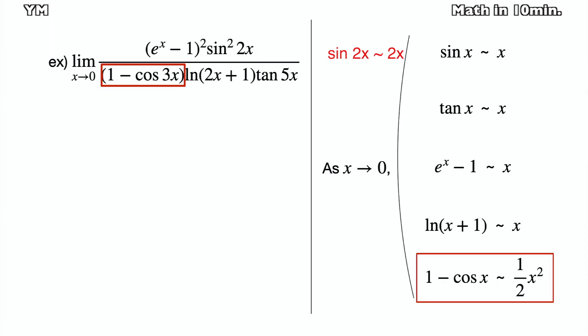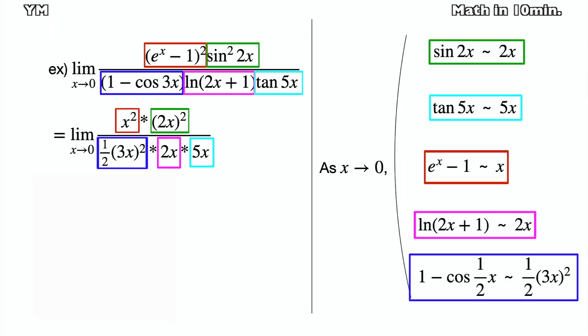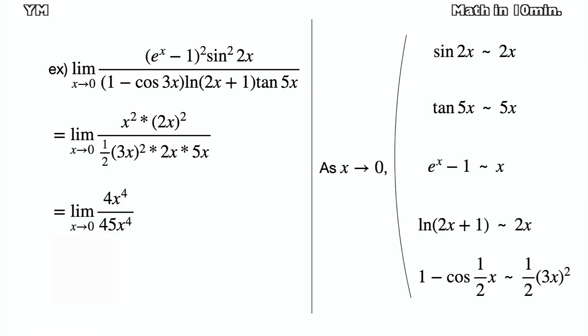Then 1 minus cos 3x approaches 1/2 times x. ln(2x+1) approaches 2x, and tan 5x approaches 5x. So it can be changed as below, and then you can easily simplify this equation and get 4/45.